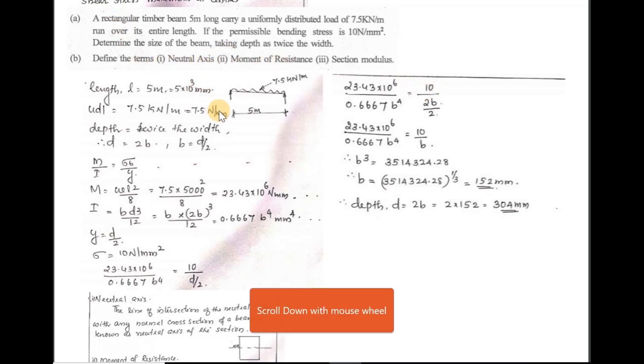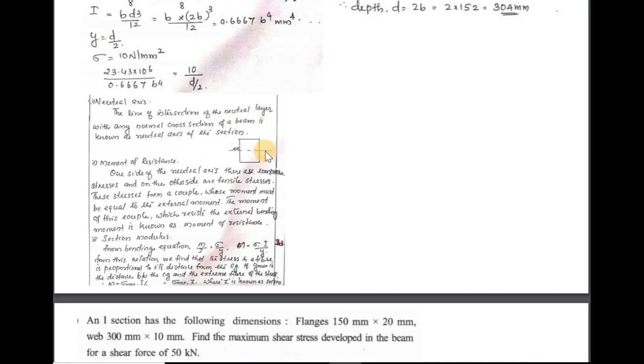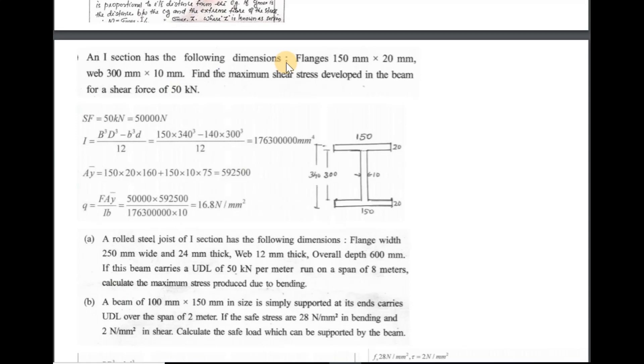The second part of the question covers definitions. The neutral axis is the line of intersection of the neutral layer with any normal cross-section of a beam; it is neither subjected to tension nor compression. The section modulus Z is defined as the moment of inertia of a section divided by the distance of the extreme fibre from the neutral axis: Z = I/y.